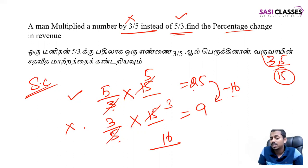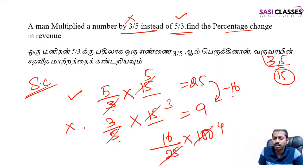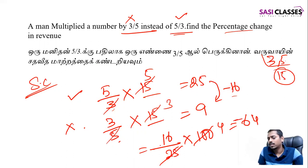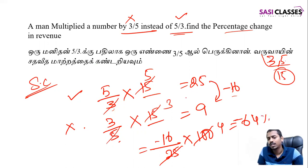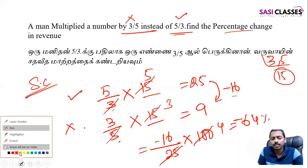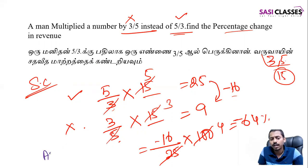So 16 out of 25 is the change from the original value of 25. So 16 into 100 divided by 25: 4 times 4 equals 16 into 4 equals 64. So the answer is minus 64 percentage — a decrease of 64%.